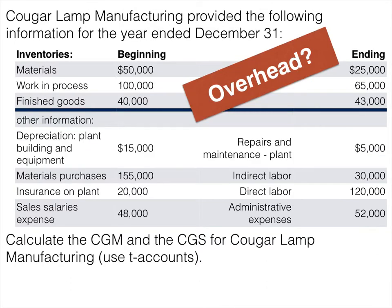Let's try one more. Here we have Cougar Lamp Manufacturing with information for the year ended December 31st. It's similar to the last problem — beginning and ending balances for the three inventory accounts and direct labor are given — but overhead is not given directly. You have to figure out what counts as overhead. Pause your player, draw the three T-accounts, fill in what you know, determine what makes up overhead, and calculate cost of goods manufactured and cost of goods sold.